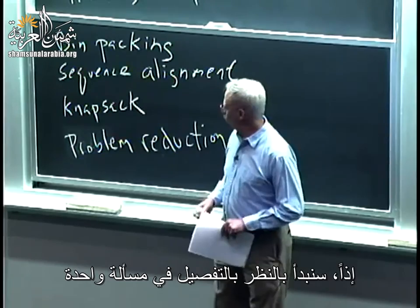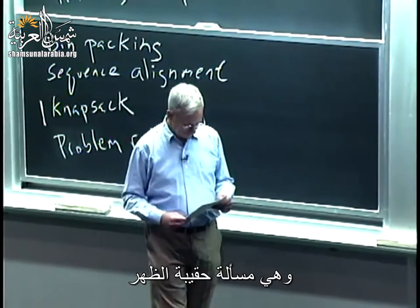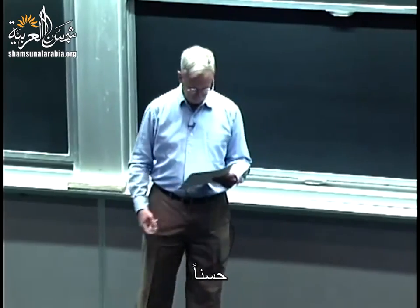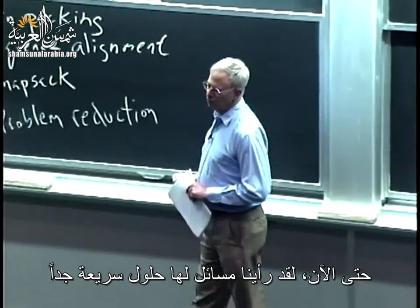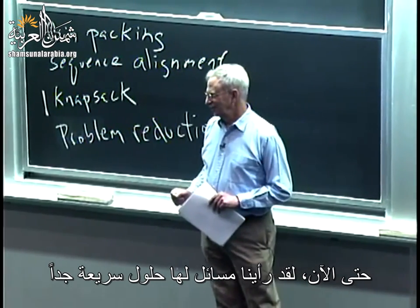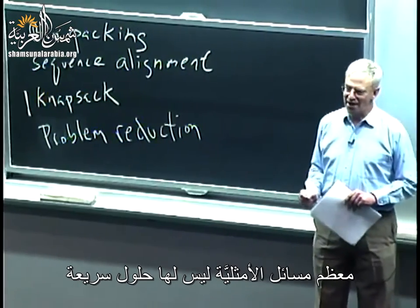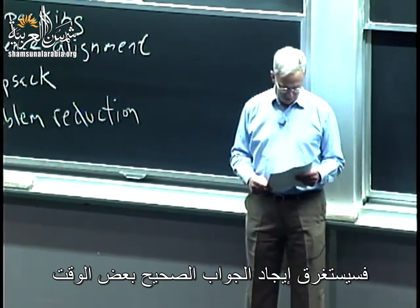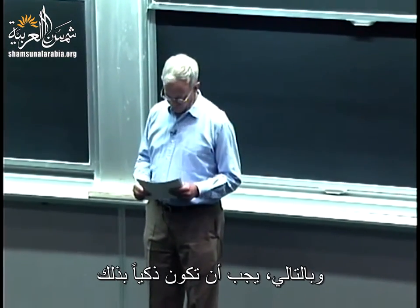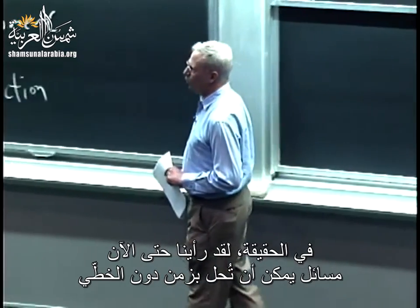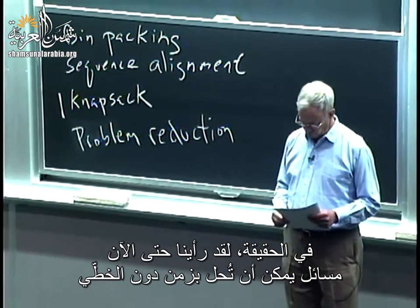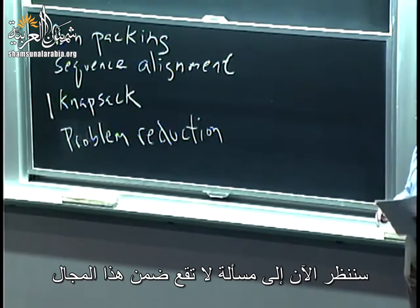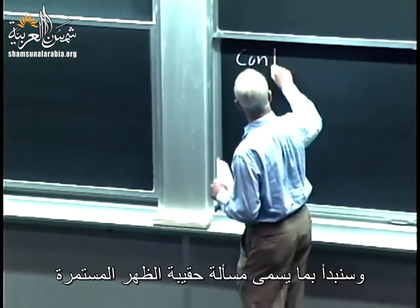In order to be able to do that, it's nice to have an inventory of previously solved problems to which we can reduce the current problem. As we go through the semester, we'll look at different previously solved problems in the hope that at some time in your future, when you have a problem to deal with, you'll say, 'oh, that's really like shortest path' or 'really like graph coloring' — let me just take my problem and turn it into that. We'll start looking in detail at one problem: the knapsack problem. Most optimization problems do not have fast solutions.